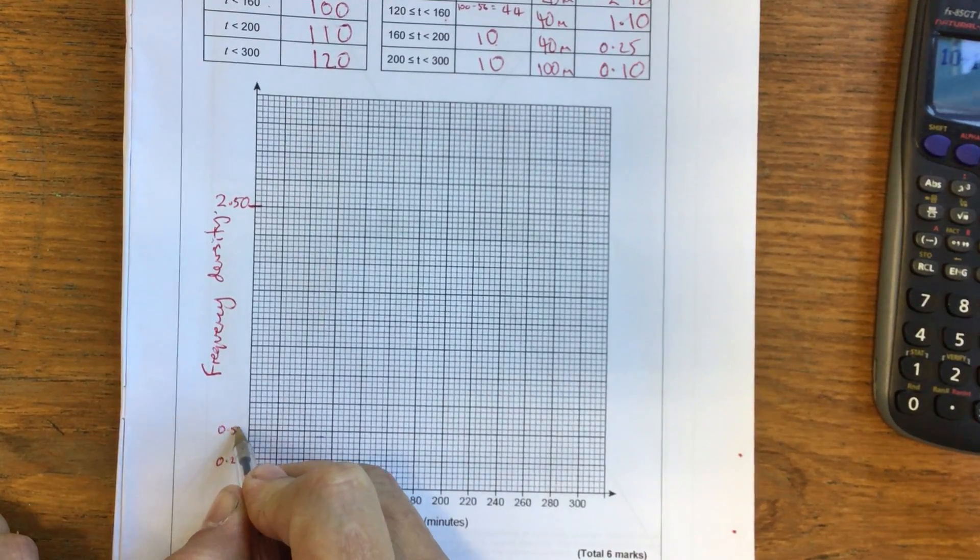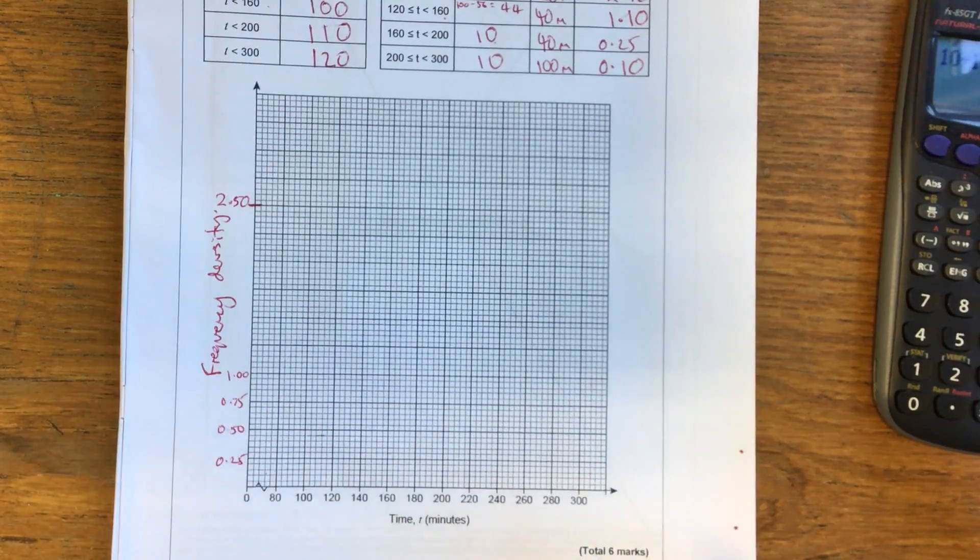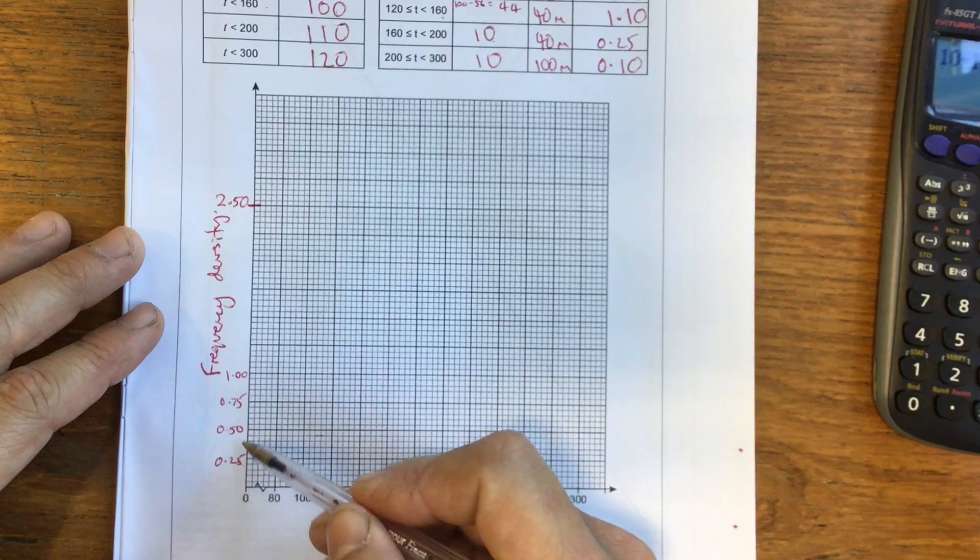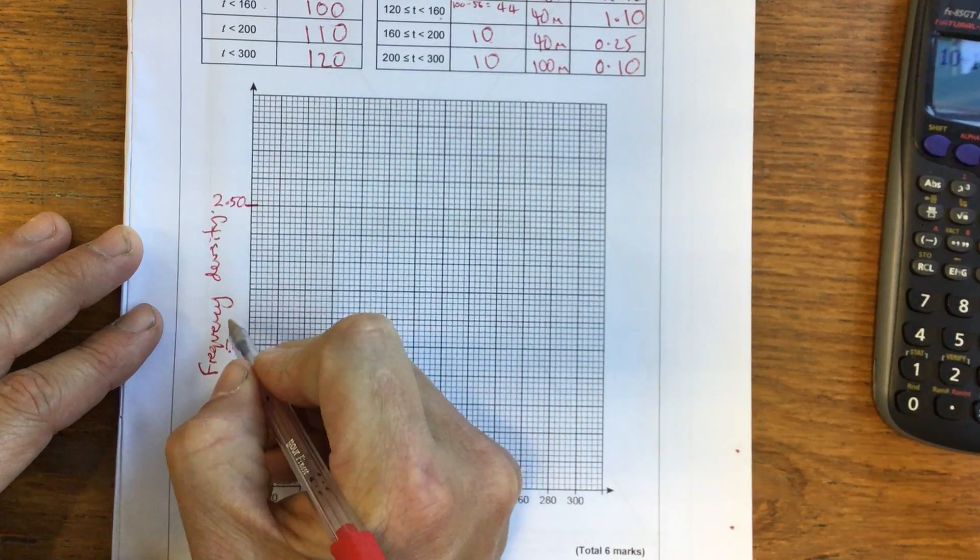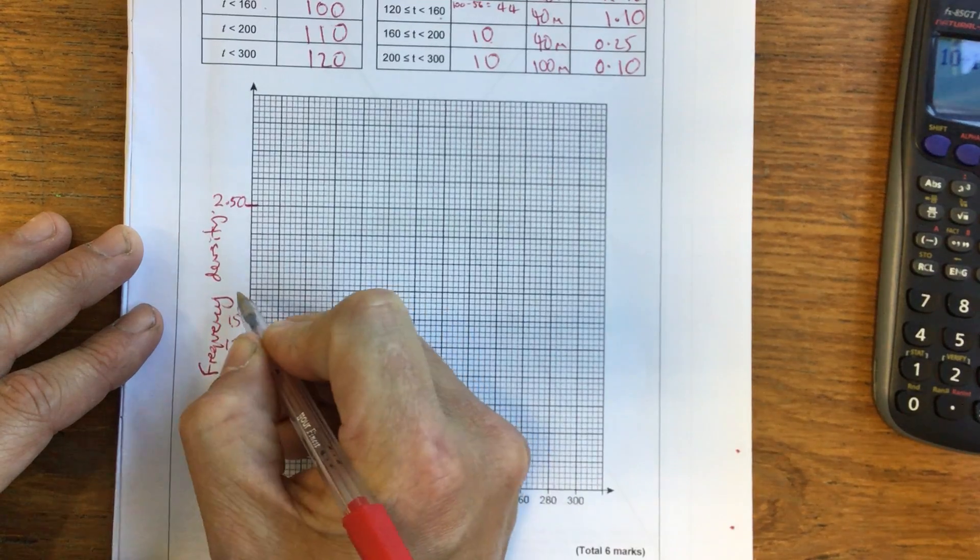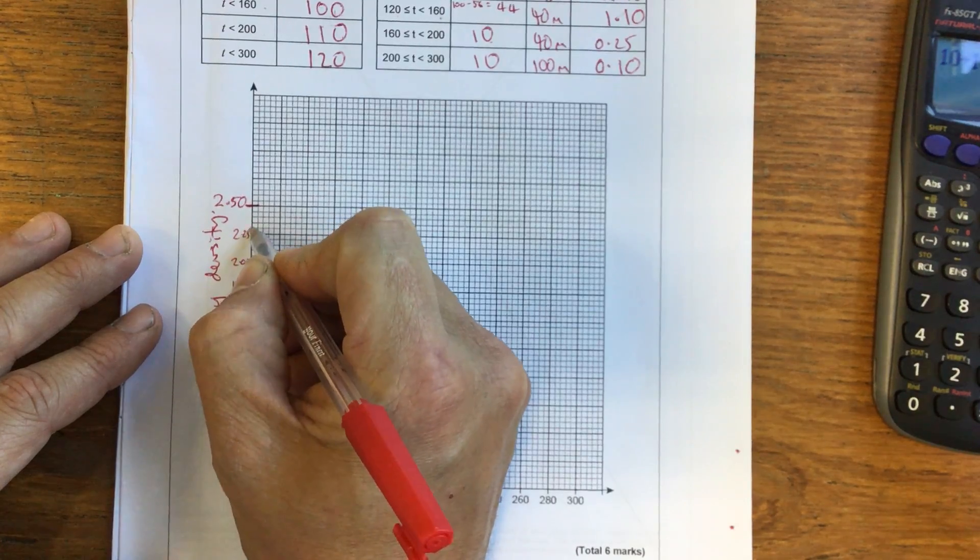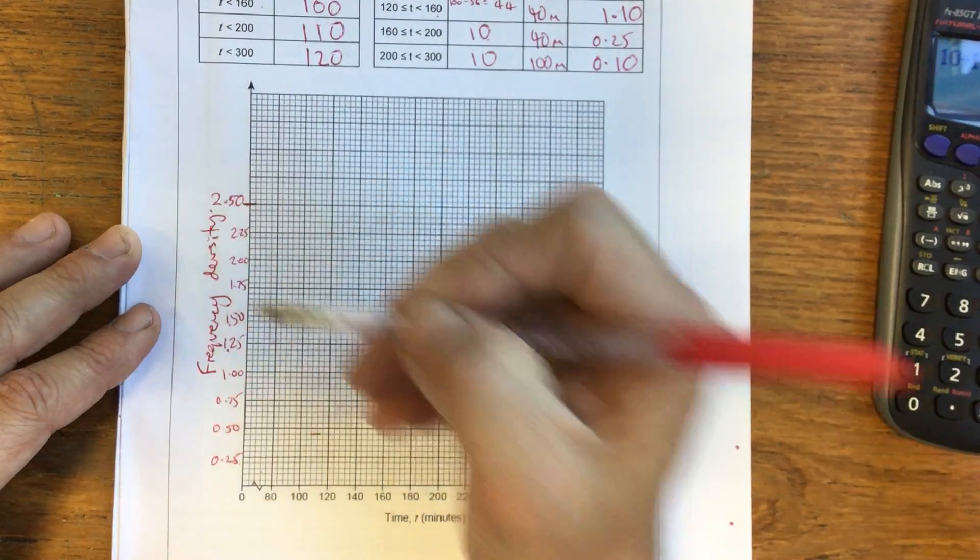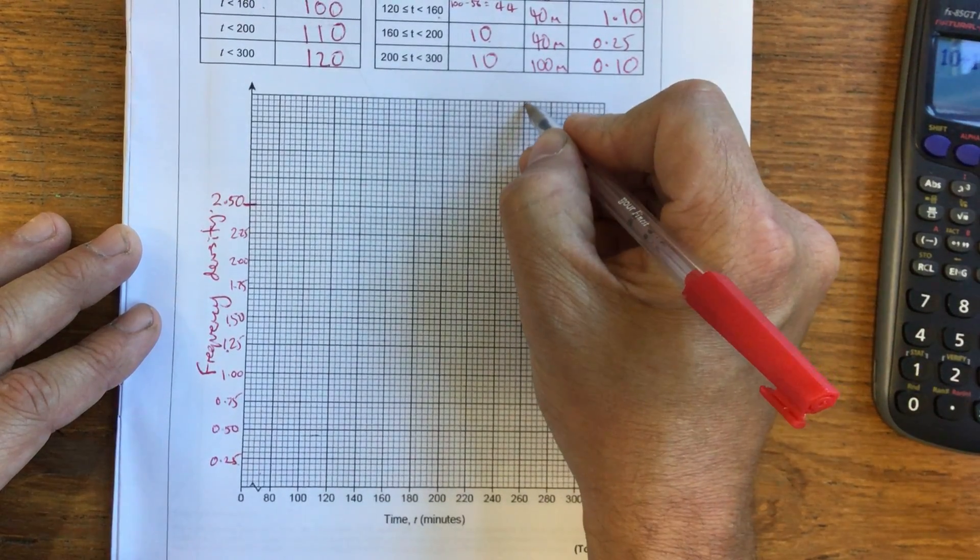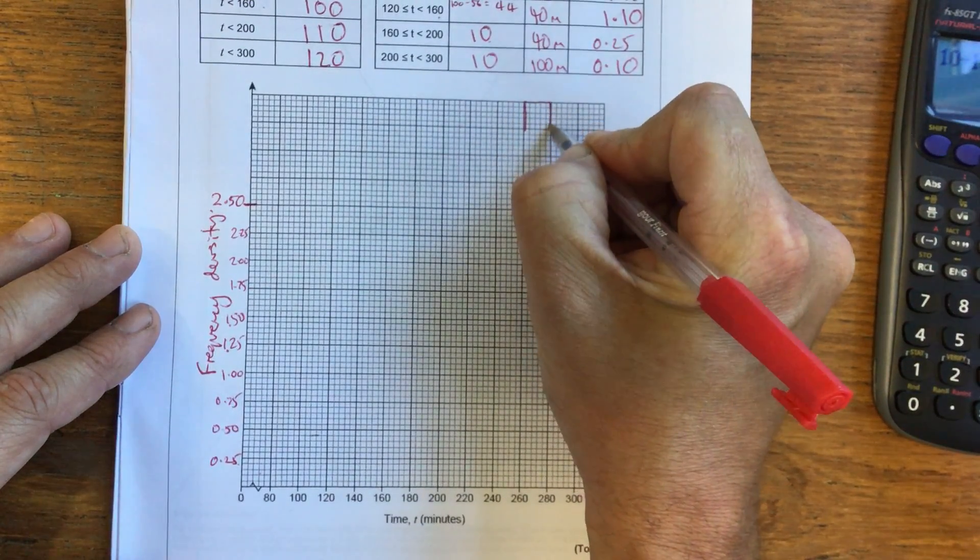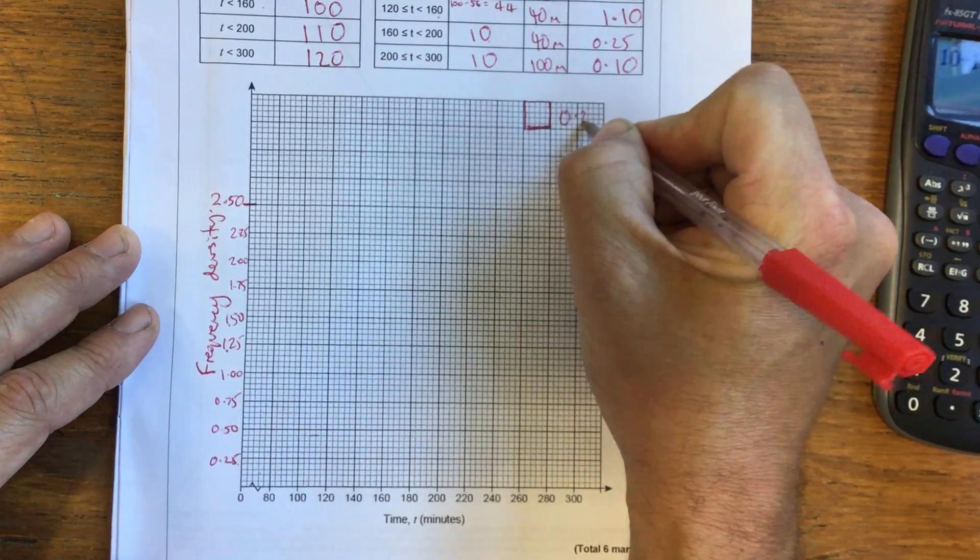So then this would be 0.50, 0.75, 1.00. So in my mind, I'm thinking of this as 25, 50, 75, 100, 125, 1.25, 150, 175, 200, 2.25. And if I've done that right, 250 should be in the right spot, and it is. So this is not something you need to add to your diagram, but I'm just going to add this in for your benefit.